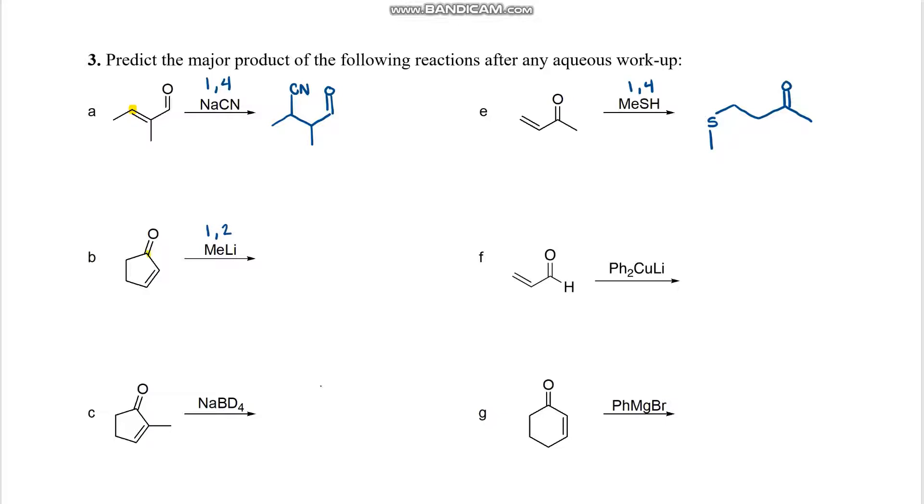For B, that will act like a Grignard, and we will add that in the 1-2 position. For F, we have a cuprate or a Grignard, that will add into the 1-4 position.